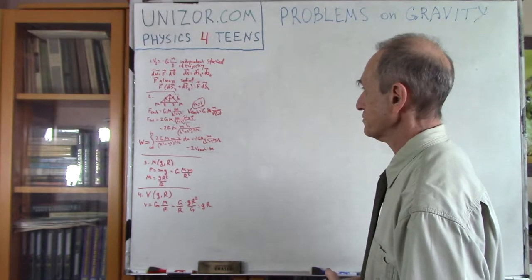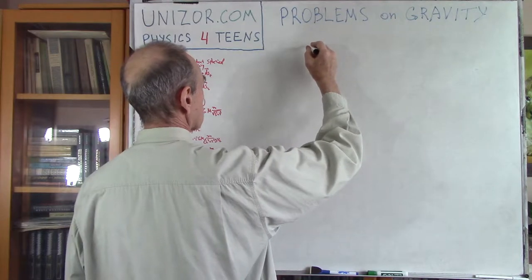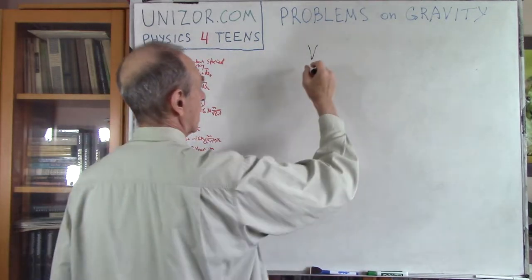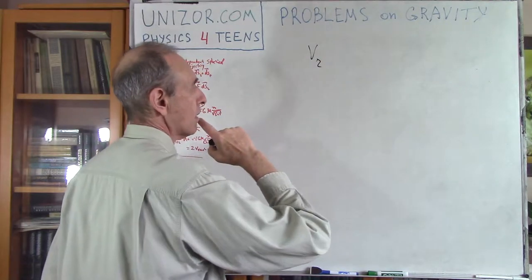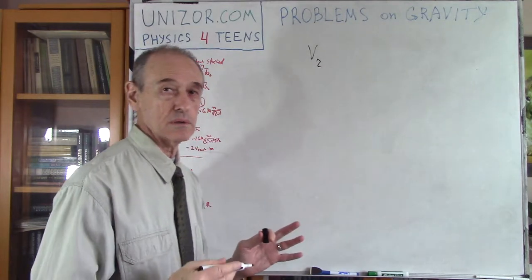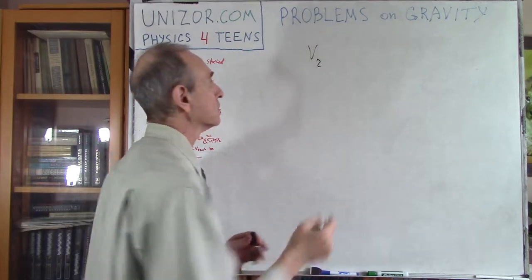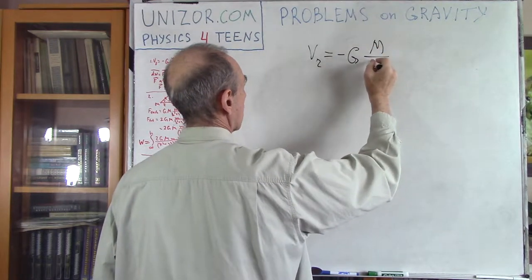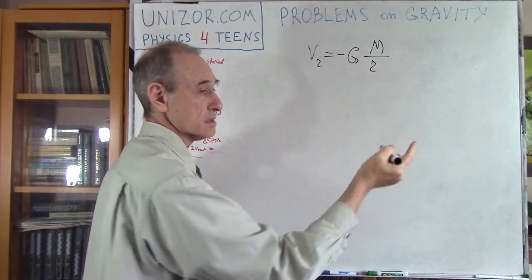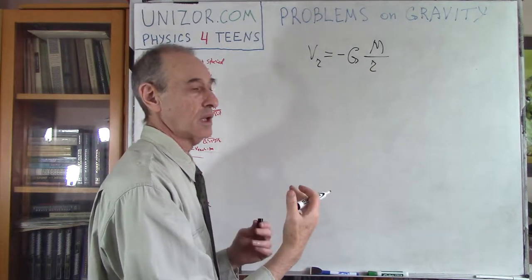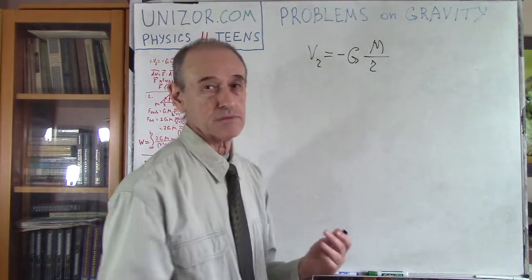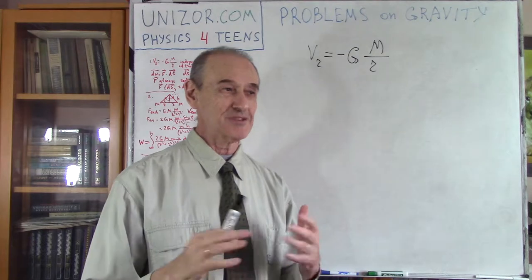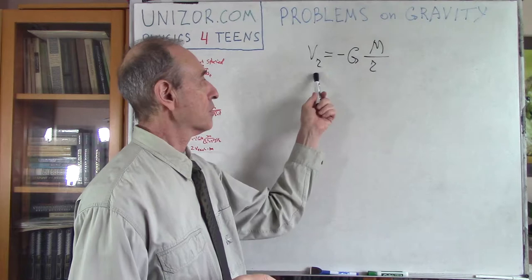Let's consider a few problems. Problem number one is related to the concept of gravitational potential, which we studied before. We use the formula that at radius r from the center of the spherical gravitational field produced by a point mass, there is this concept called gravitational potential, which is equal to minus G capital M divided by r, where r is the distance from the point mass. G is the universal constant, and M is the mass of the point mass at the center of gravity. What might seem strange at first is that this formula depends only on radius.